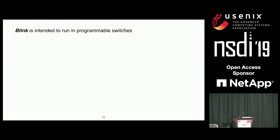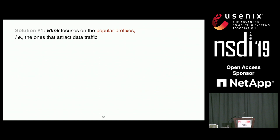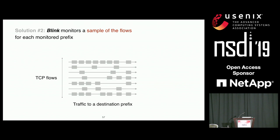Blink is intended to run in programmable switches, which have very limited resources — limited memory and limited operations per packet. Blink clearly cannot monitor all 700,000 prefixes advertised on the internet, so it focuses on the most popular ones that attract data traffic. This makes sense because as a data-driven system, Blink needs data traffic to work. The good news is that internet traffic follows a Zipf distribution, so by doing this, Blink is able to cover the vast majority of internet traffic. For a given monitored prefix, Blink cannot monitor all flows, so it monitors a sample.